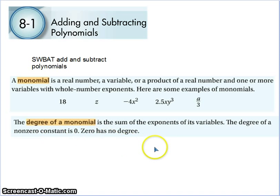One of the things that doesn't make it a monomial is if the variable is in the denominator. Alright, the degree of a monomial, read the definition, non-zero constant.